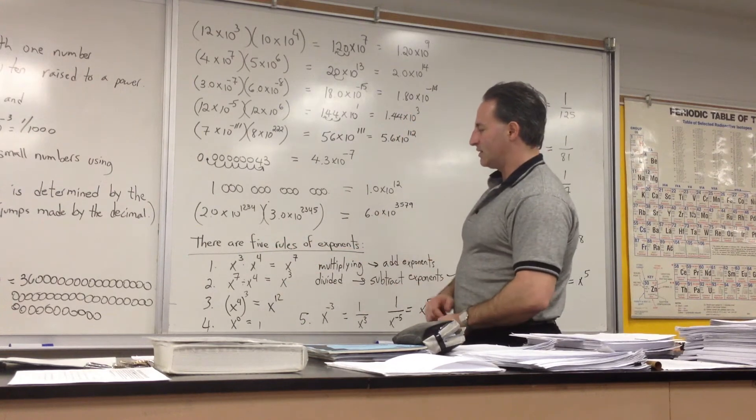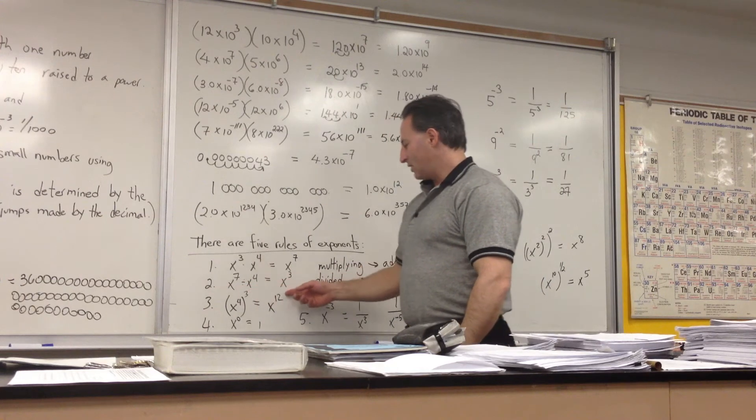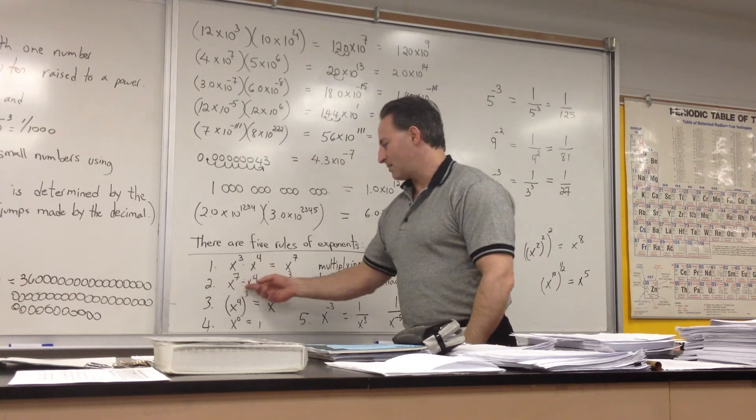If you're dividing exponents, x to the 7 divided by x to the 4 will give you x to the 3. Again, the same rule applies. You have to have the same base.